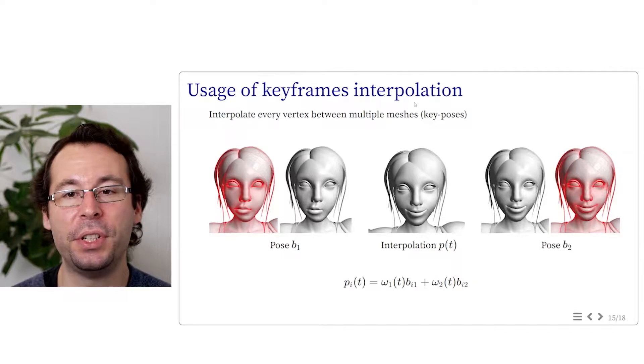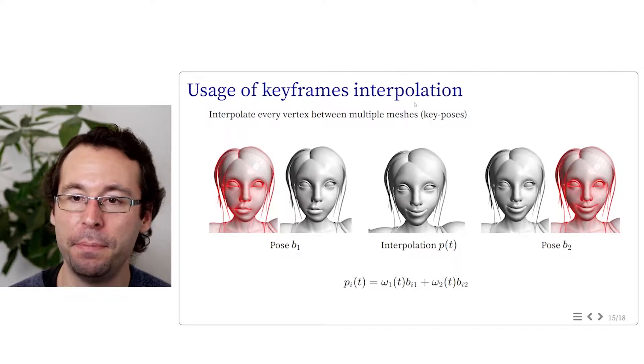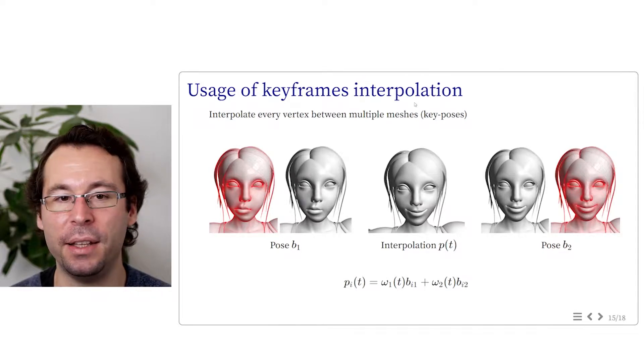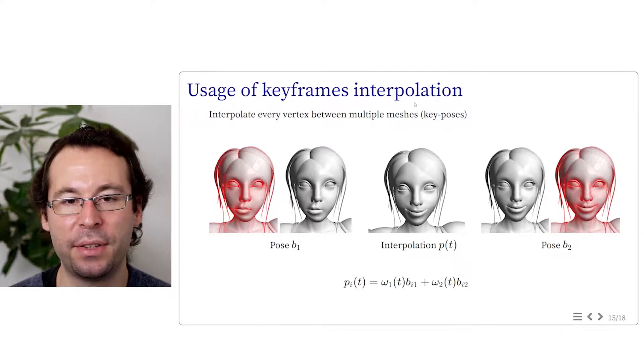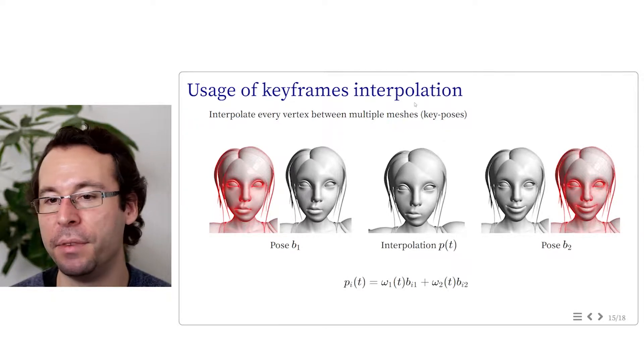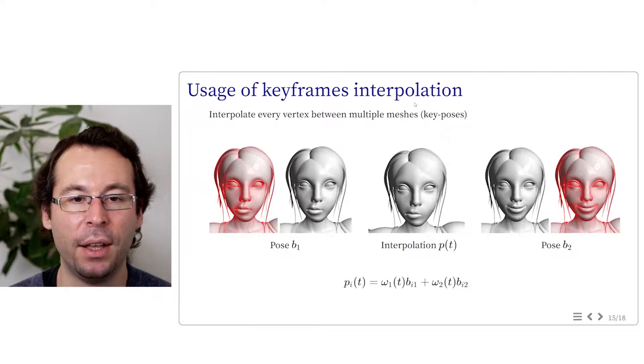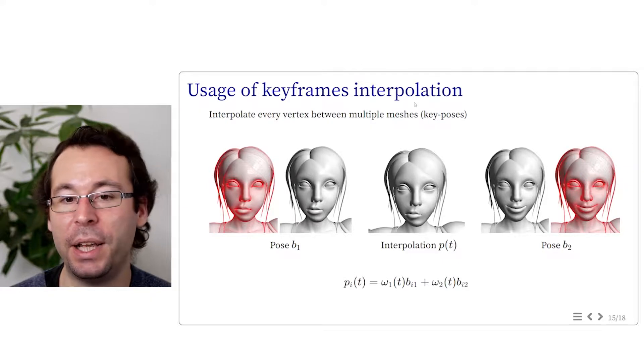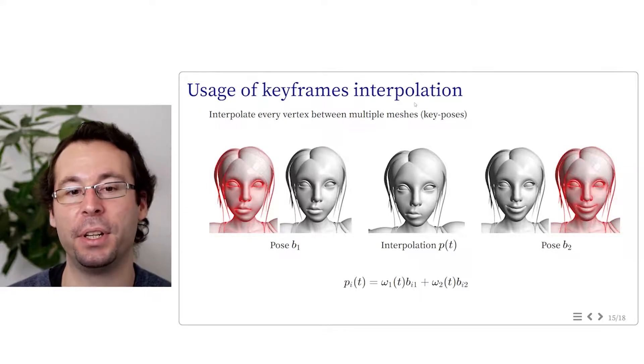The process of interpolation in itself is easy. For instance, we can take two basis poses, B1 and B2. In this example, we interpolate linearly between these two positions. We can call the interpolation weights omega 1 and omega 2. And in this case, omega 2 is equal to 1 minus omega 1. Note that interpolating between positions means that we interpolate each vertex position of each pose independently.